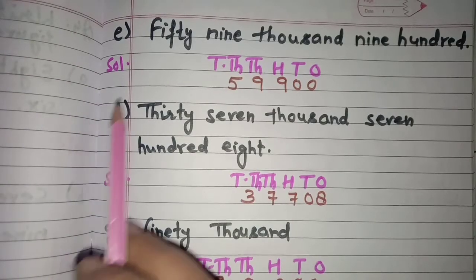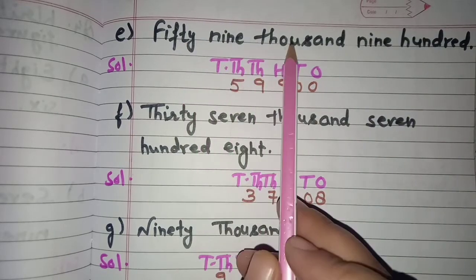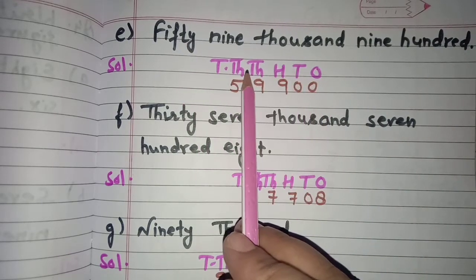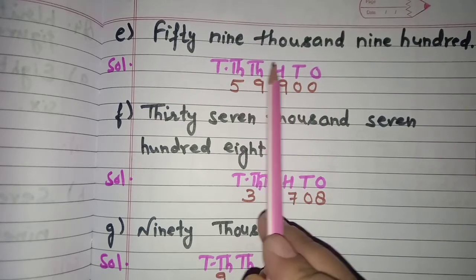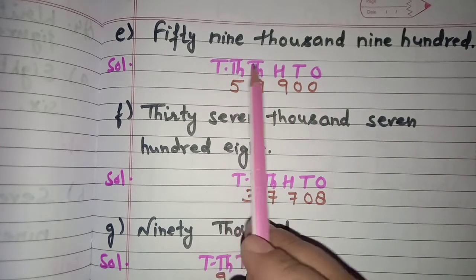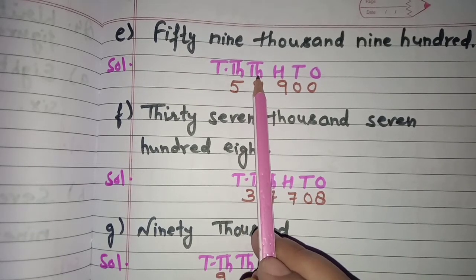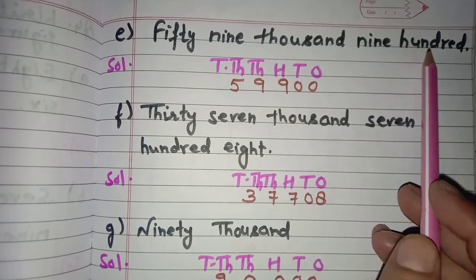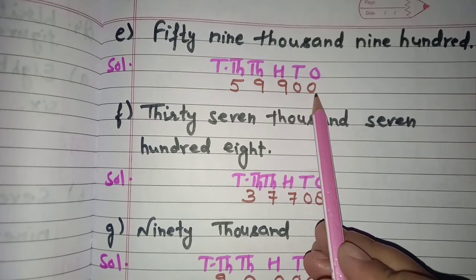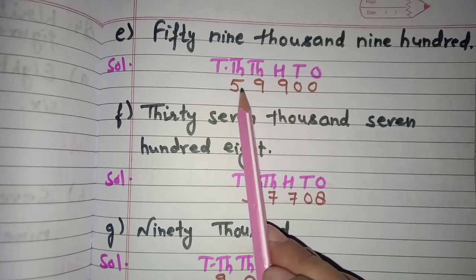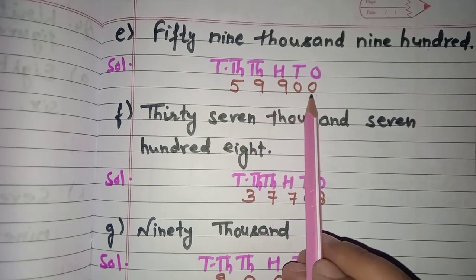Now next: 59,900. 59,000 means we mention places up to ten thousands — ones, tens, hundreds, thousands, ten thousands. So 5 under ten thousands and 9 under thousands. Then 900: 9 under hundreds place and at tens and ones we write 0. So the figure is 59,900.